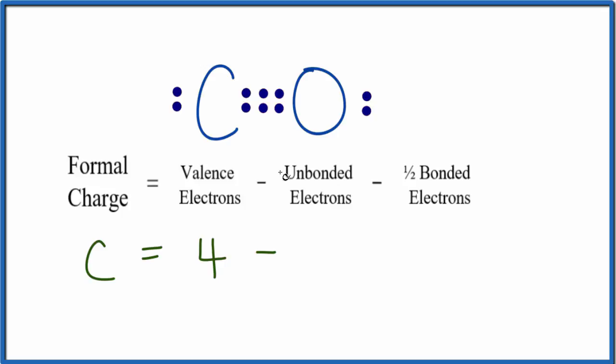We'll subtract the unbonded valence electrons. That's these electrons right here. They're not bonded to anything. They're not between atoms. We have two of those, and then we'll minus half of the bonded electrons. These are the ones here involved in the chemical bond between the carbon and the oxygen.